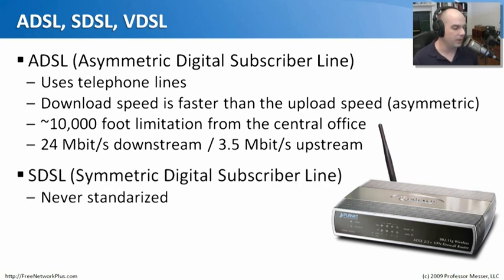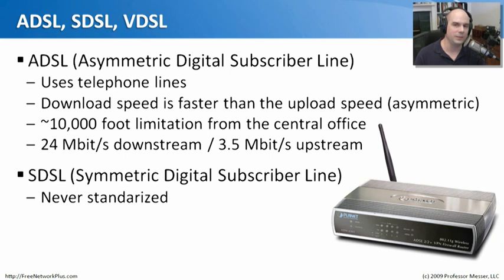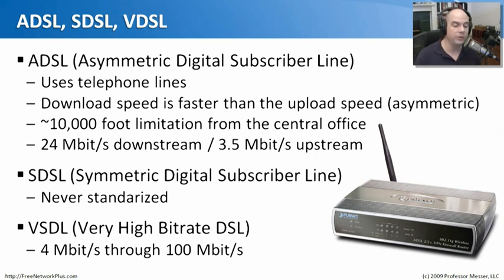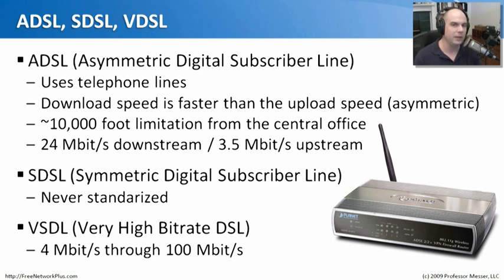There's also a DSL type called Symmetric DSL, where download speed equals upload speed. However, this standard was never truly standardized — it was very specific to manufacturer's equipment and therefore wasn't widely implemented. What we're seeing these days is the next step up: VDSL, which stands for Very High Bit Rate DSL. Especially in Japan and other environments, speeds of 4 megabits to 100 megabits per second are available, and this is likely to become more popular as the standard gets rolled out in more places.